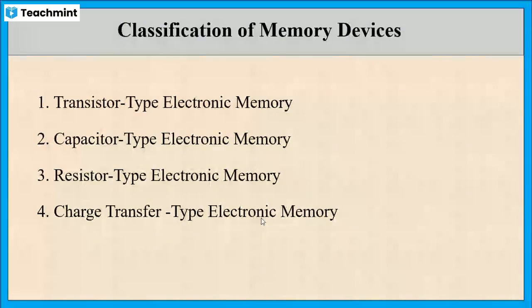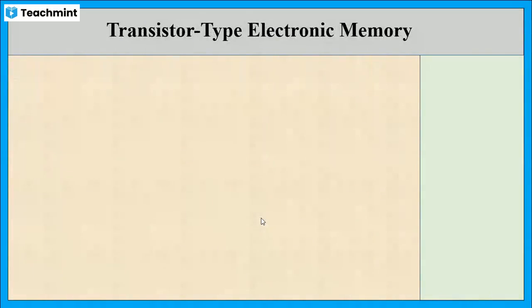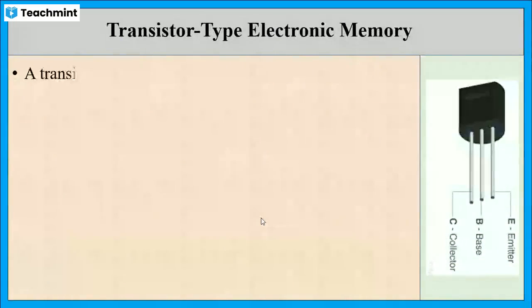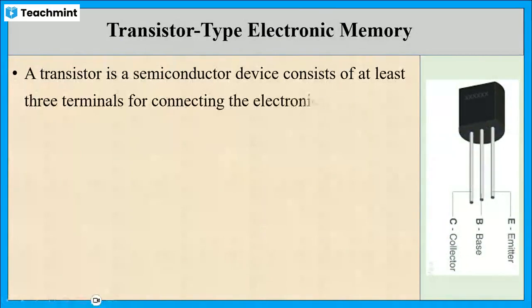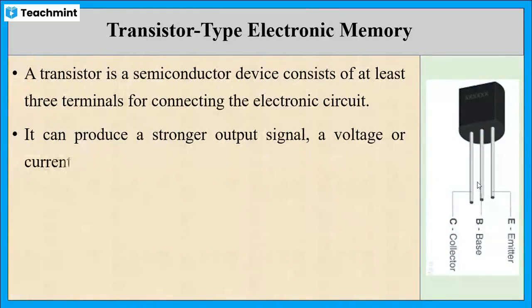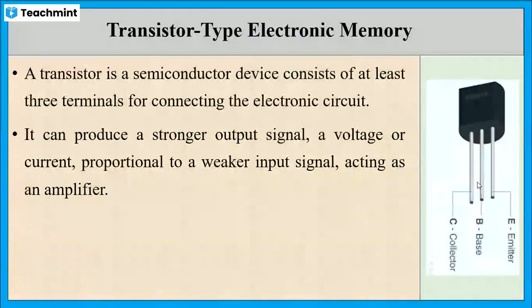First, let us discuss transistor type electronic memory. A transistor is a semiconductor device consisting of at least three terminals for connecting the electronic circuit. It is used as an amplifier as it produces a stronger output signal, a voltage or current, proportional to a weaker input signal.